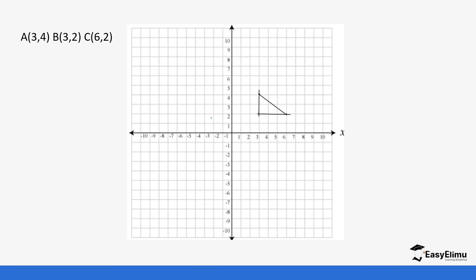Next we look at triangle ABC. Our vertex A is at (3, 4), our B is at (3, 2), and our C is at (6, 2). So this is our triangle ABC.